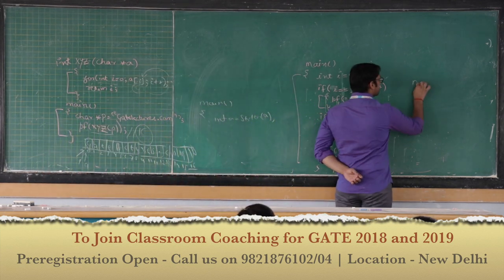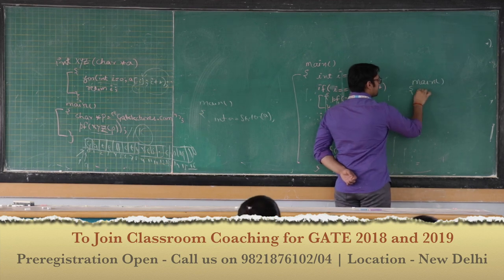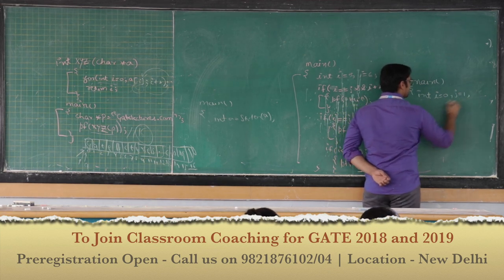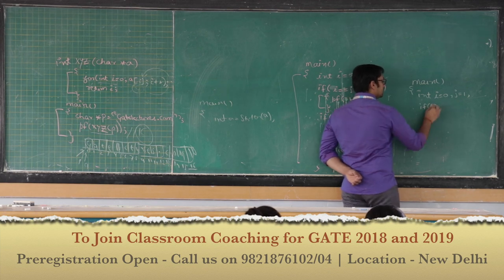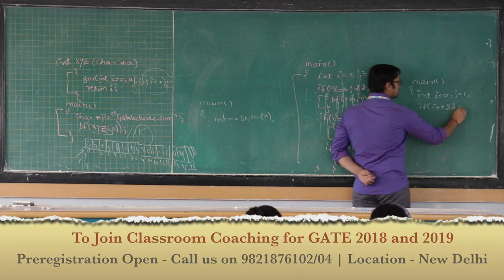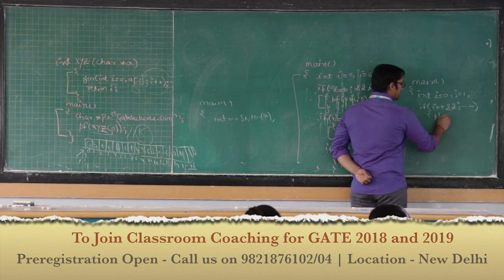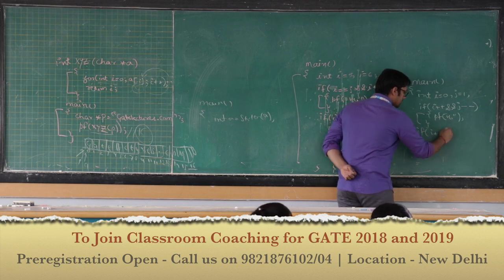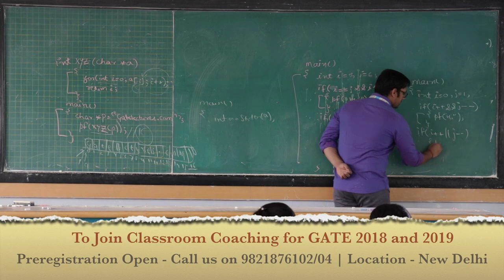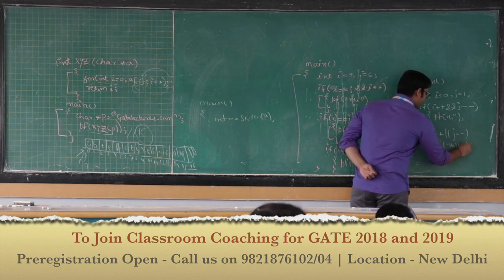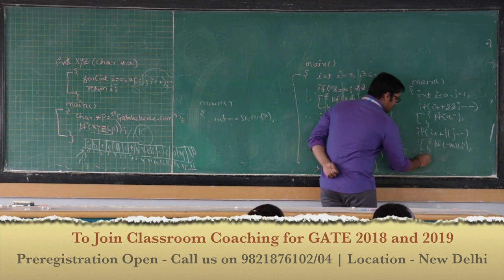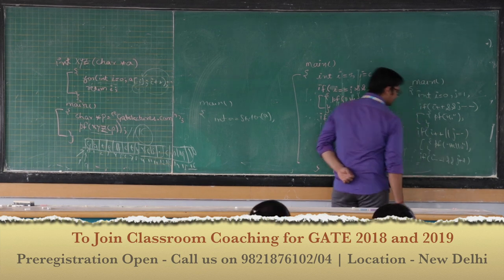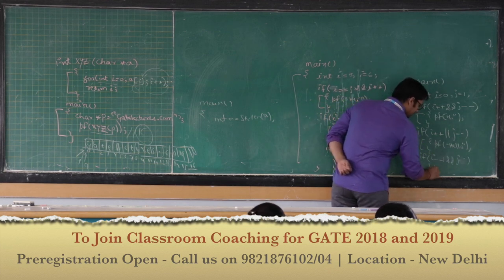The second program is like this. Main function: integer i is equal to 0 and j is equal to 1. If i++ AND j--, then printf 'hi'. If i++ OR j--, then printf 'hello'. If i-- AND j++ AND j, then printf 'yellow'.